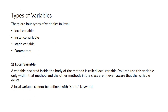There are four types of variables in Java programming: local variables, instance variables, static variables, and parameterized variables. Local variables are variables declared inside the body of a method — they are called local variables.